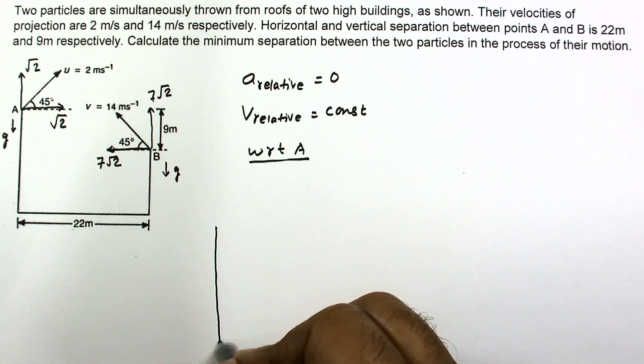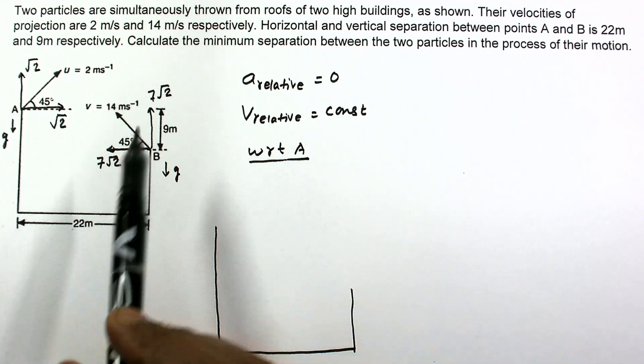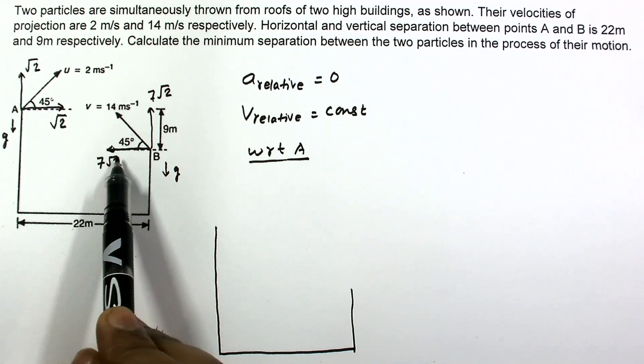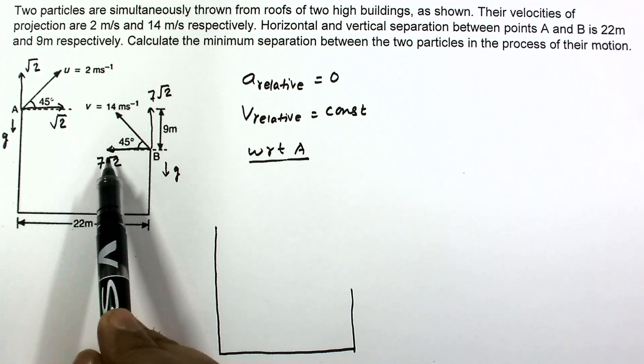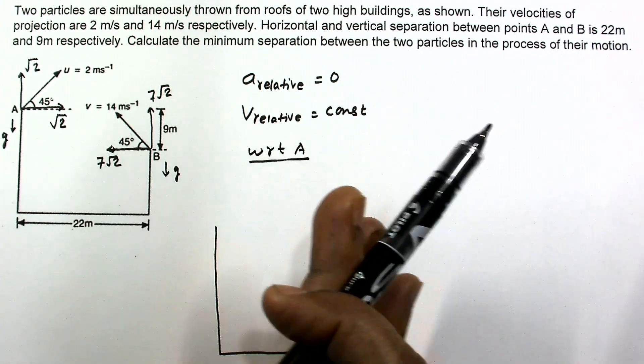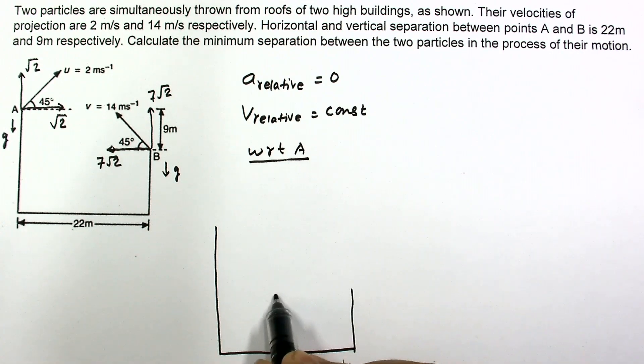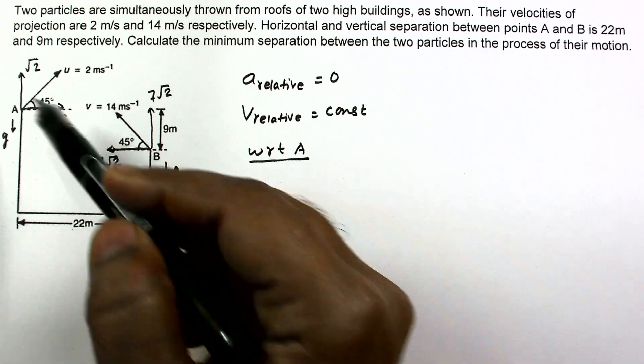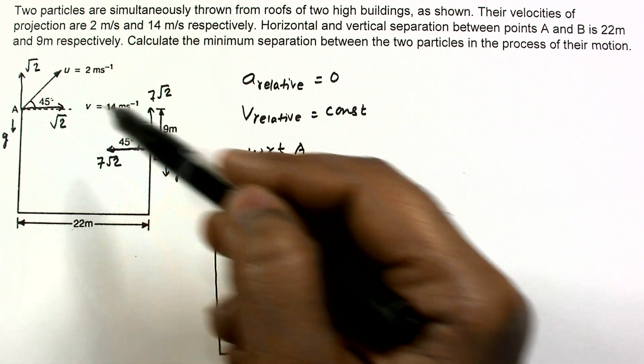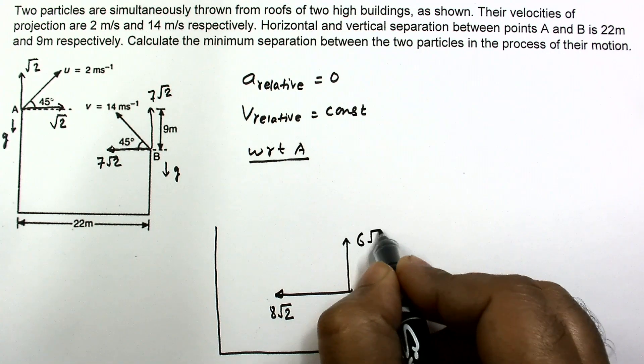Now I am making a diagram. In horizontal direction the relative velocities: I am stopping A and this root 2 in the opposite direction is added to B. Both 7 root 2 and root 2 are in the opposite direction, so it will be 8 root 2. In the vertical direction, this downward root 2 will be added to 7 root 2, so it will become 6 root 2.